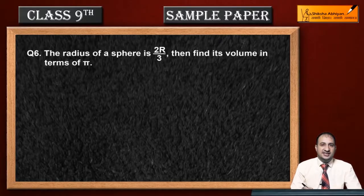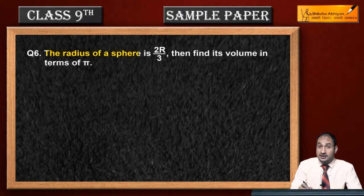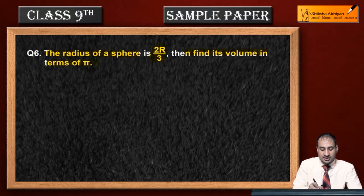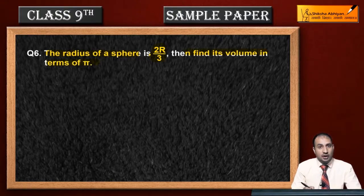Now see question 6. The radius of a sphere is 2R by 3. Then find its volume in terms of pi. Pi ki terms mein iska volume batana hai.